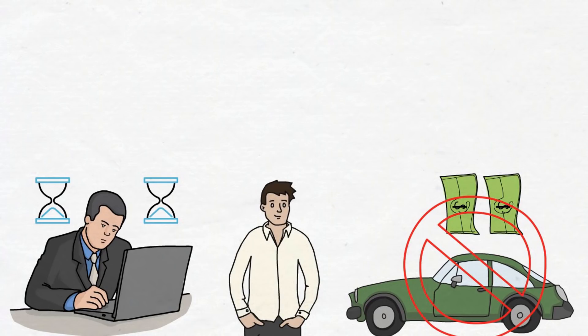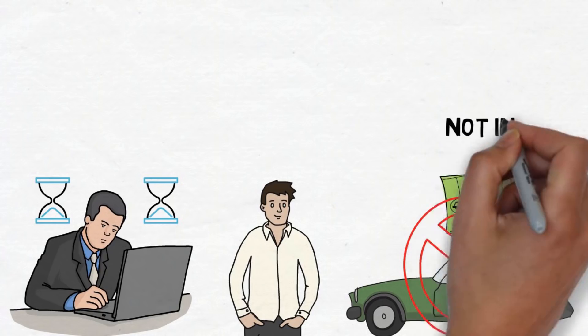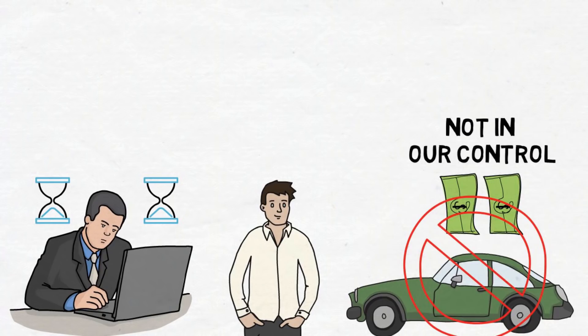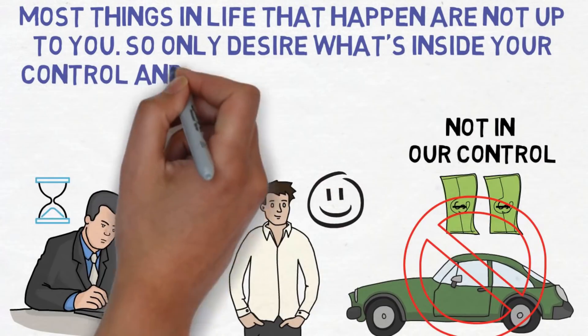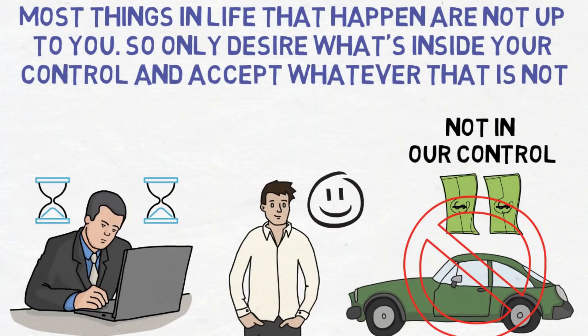Stoics believe that the outcomes, whatever they may be, are not in our control, so instead of getting angry or reacting in an unhealthy manner when things don't turn out the way you want, you should love and accept it however it turns out. Most things in life that happen are not up to you, so only desire what is inside your control and accept whatever that is not.